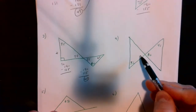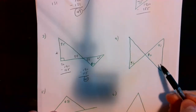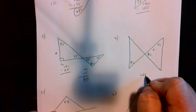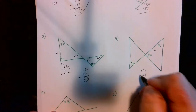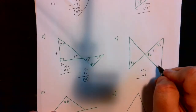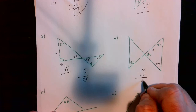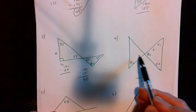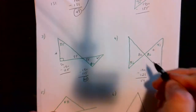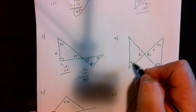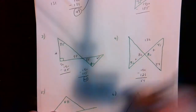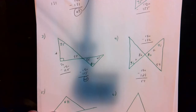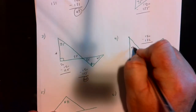In this two-triangle picture, one triangle has two angles given: 80 and 41. Adding those gives 121, and 180 minus 121 makes that angle 59. Then, since these are vertical angles, the angle across is also 80. Adding 80 plus 52 gives 132, and 180 minus 132 comes out to 48.